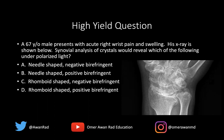Synovial analysis of crystals will reveal which of the following under polarized light? Would the crystals be needle-shaped with negative birefringence, needle-shaped with positive birefringence, rhomboid-shaped with negative birefringence, or rhomboid-shaped with positive birefringence? It's based off of this X-ray of the wrist. Give you a few moments to ponder about that, and we'll come back to this question at the end of the series.